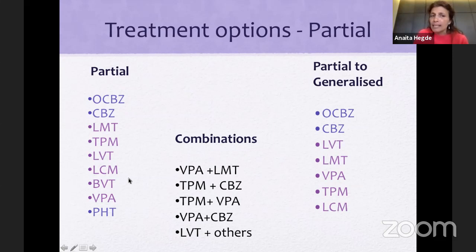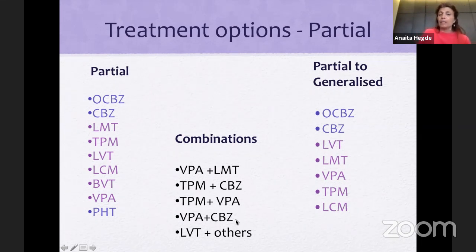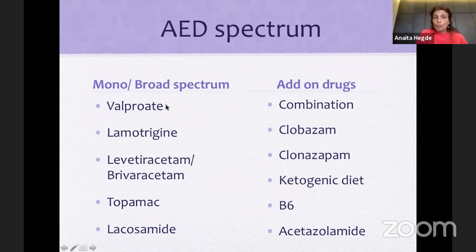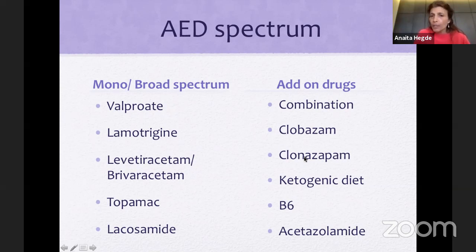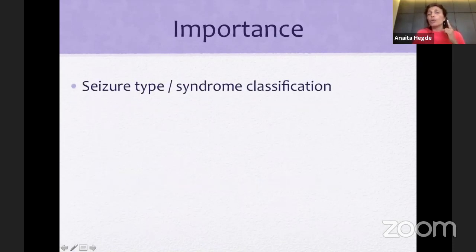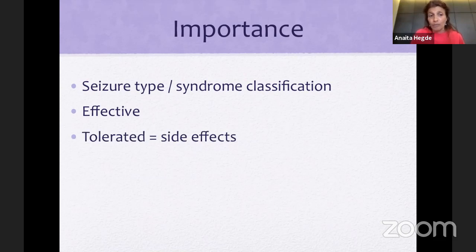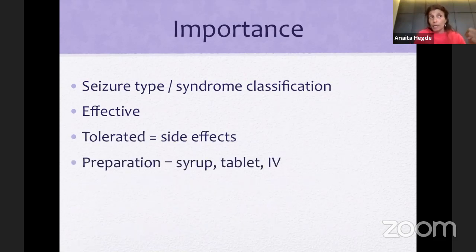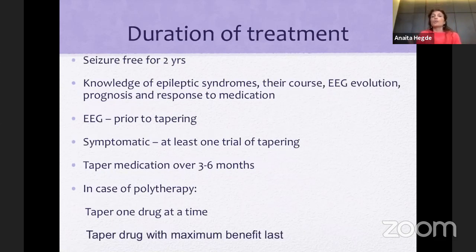Add-on drugs include clobazam, clonazepam, ketogenic diet, B6, and acetazolamide. When choosing: first look at seizure type or syndrome, then drug efficacy, then tolerability and side effects, then whether there is a syrup, tablet, or IV preparation depending on the child's age, and keep cost in mind — all in relation to your patient. For example, a thin 10-year-old girl whose mother says she doesn't eat — I will never choose a drug that causes loss of appetite. I will put her on valproate, which may increase appetite. So you choose your drug depending on the person sitting opposite you.